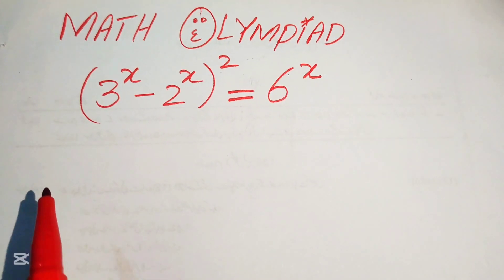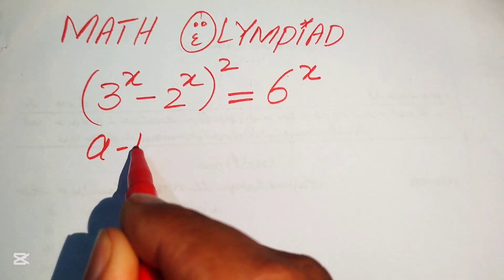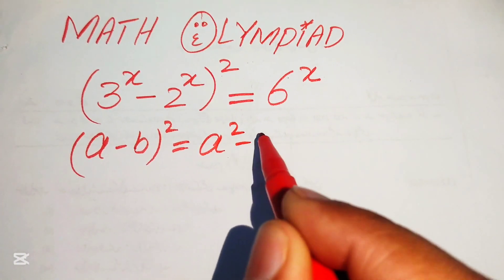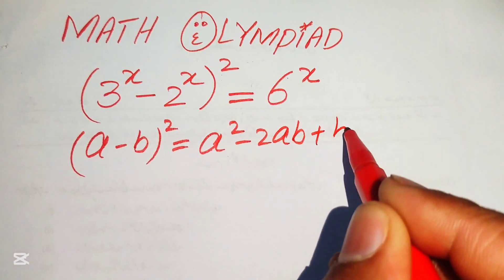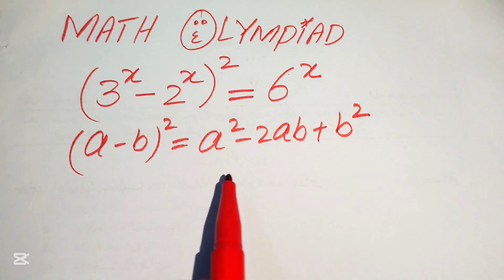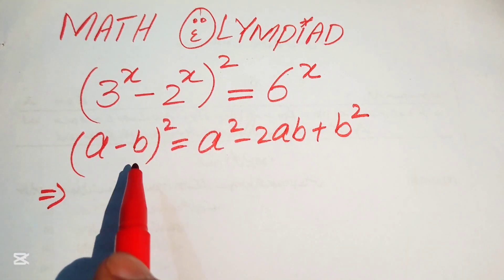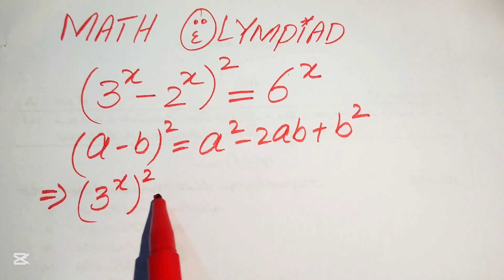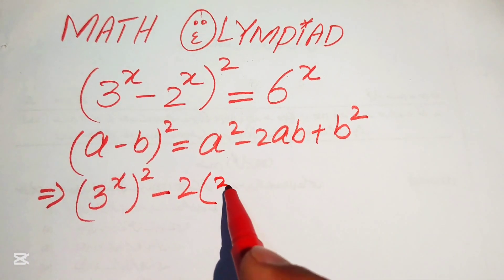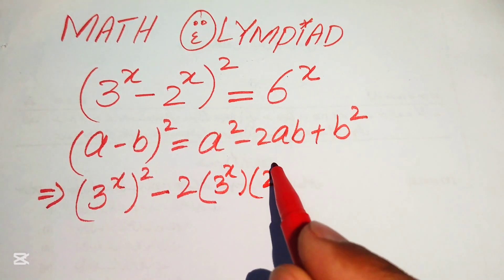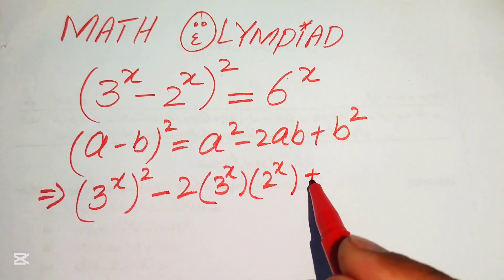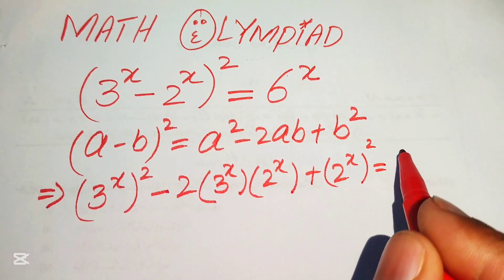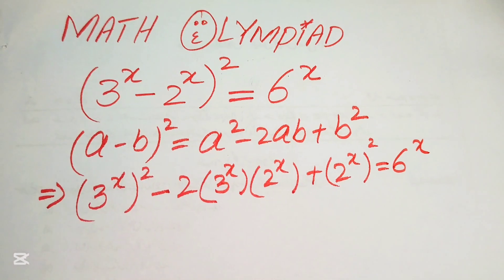The first step is to apply the algebraic formula (a - b)² = a² - 2ab + b². So we expand the left-hand side as (3^x)² - 2·(3^x)(2^x) + (2^x)², and this equals 6^x.